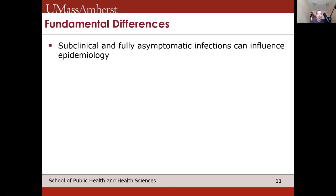One difference between ID epidemiology and classic epidemiology is that subclinical and fully asymptomatic infections can influence the epidemiology. We're not just talking about people who are coughing or are sick — we also have people showing no signs of disease who are still influencing transmission dynamics and able to transmit. HIV is one example: when a person is infected with HIV, it can often be several years before they experience symptoms, but during that time they're able to transmit and without a test have no idea they're infected.